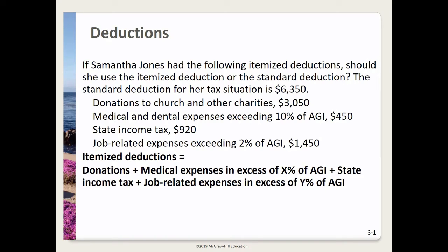In this video I'll be going over the Chapter 3 homework problems. In this first problem we're looking at deductions. If Samantha Jones had the following itemized deductions, should she use the itemized deduction or the standard deduction? Note that the standard deduction for her tax situation is $6,350.